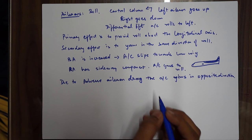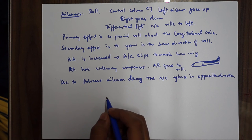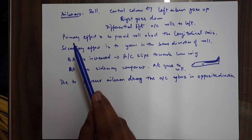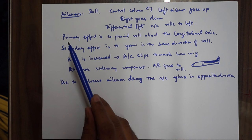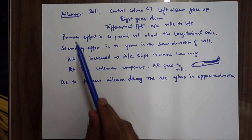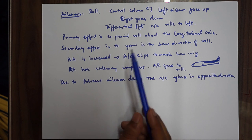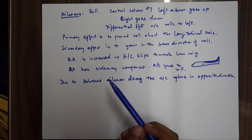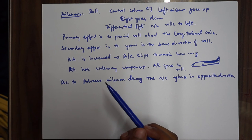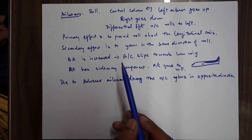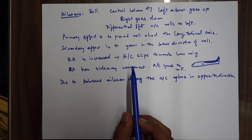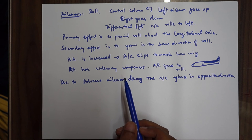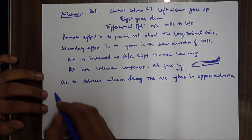Sometimes the primary controls — ailerons, elevators, and rudders — are combined to form one surface. Examples include elevons, ruddervators, and flapperons. These surfaces are combined so that two functions are merged into one, generally to reduce the effect of adverse yaw.